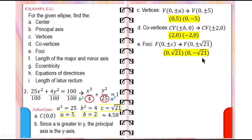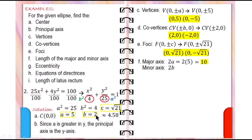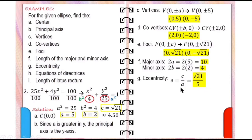The length of the major axis is 2 times 5 — the value of A — which is equal to 10. While the length of the minor axis is 2B, where B is equal to 2, so 2 times 2 is 4. The eccentricity is equal to C over A, where C is equal to the square root of 21 and A is equal to 5, and this is approximately equal to 0.92.